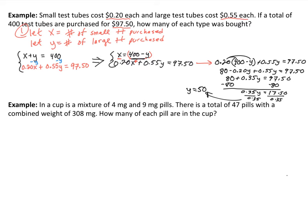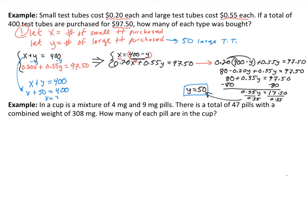When I found Y equal to 50, I need to recall what Y represents. Y was defined as the number of large test tubes purchased, so that means I purchased 50 large test tubes. We still don't know the number of small test tubes. Going back to the equation X plus Y equals 400, and substituting Y equals 50, X is going to equal 350. So there are 350 small test tubes purchased.